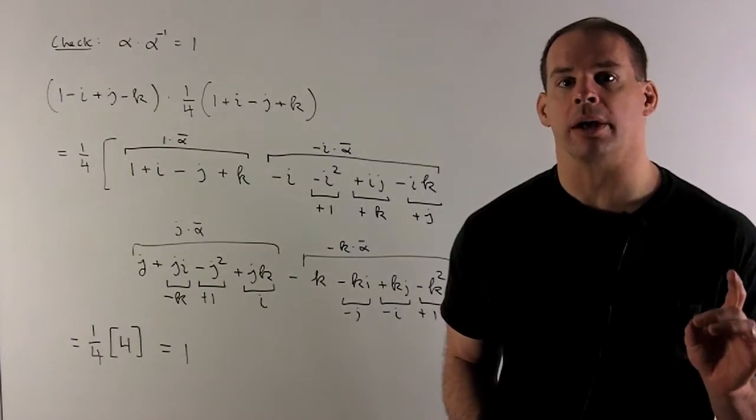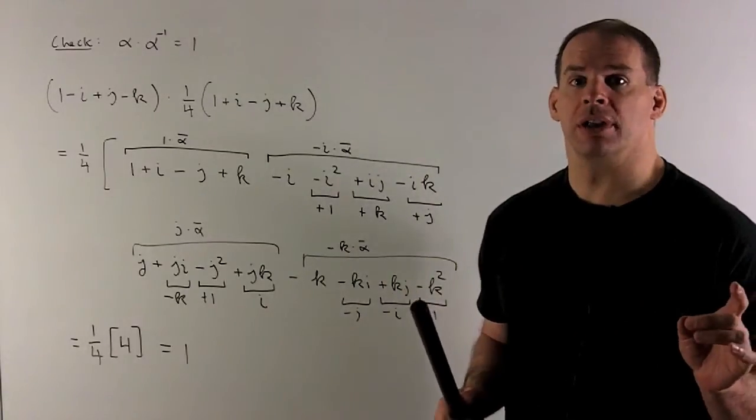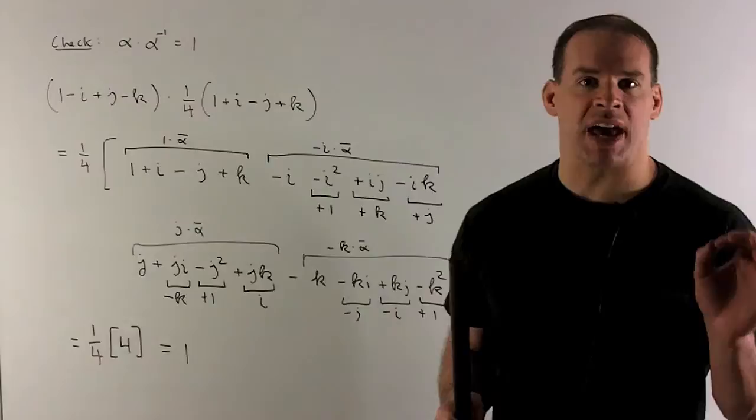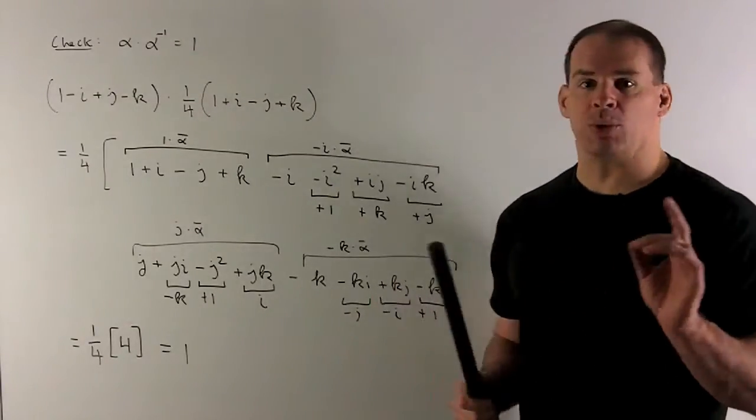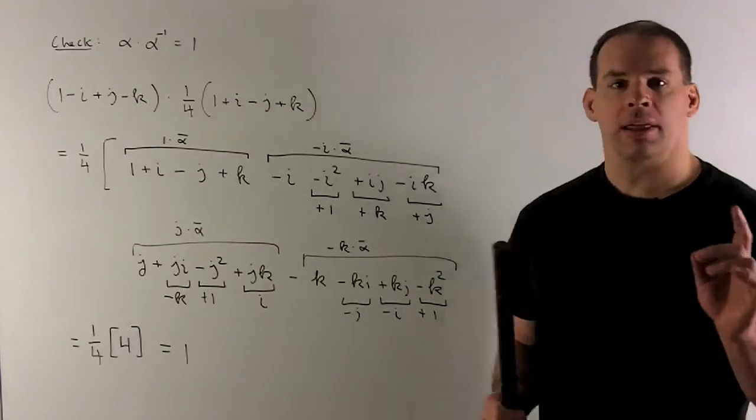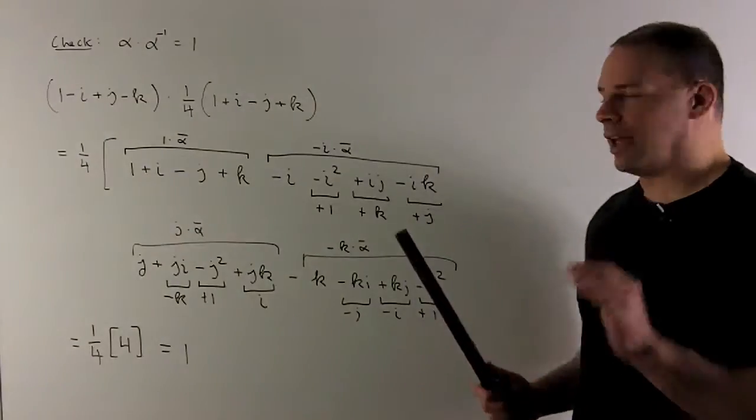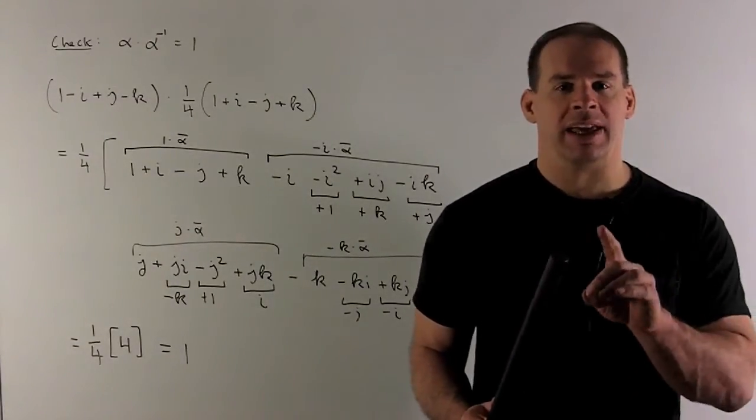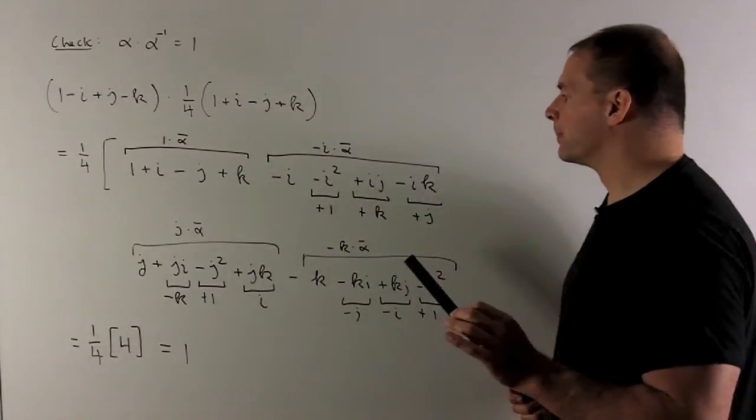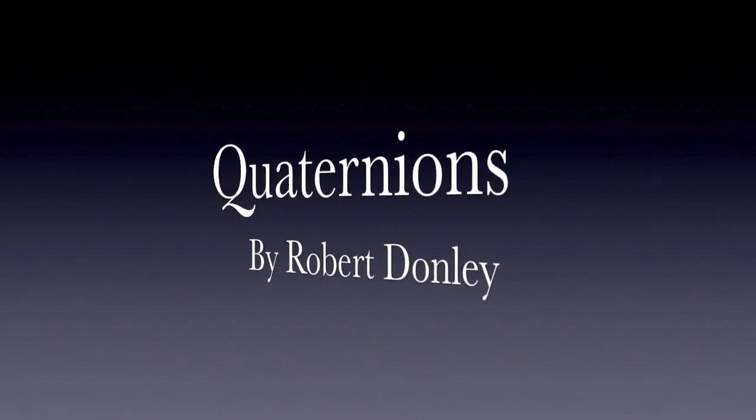Let's check the alpha times alpha inverse equals 1. So, first thing I can do, I can pull the 1 fourth to the outside. That leaves us with an alpha bar where we had alpha inverse. Now we're going to have 4 products. I'm going to take each term that's in alpha, hit it against alpha bar. So let's take a look at, for instance, minus i times alpha bar. So, minus i times 1 is minus i. Minus i times i. It's going to give me a minus i squared or a minus and minus 1, which is a 1. Then we'll have minus i times minus j. It's going to be i times j. And then in order, it's i, j, k. So that's just going to be plus k. And then we have minus i times k. And then note, it would be k, i, j. So we get a minus j with a minus 1 in front. So we get a plus j. When we do each of these, collect our terms. We're going to be left with a 4 with a 1 fourth out in front. So we wind up getting 1 and our check works.